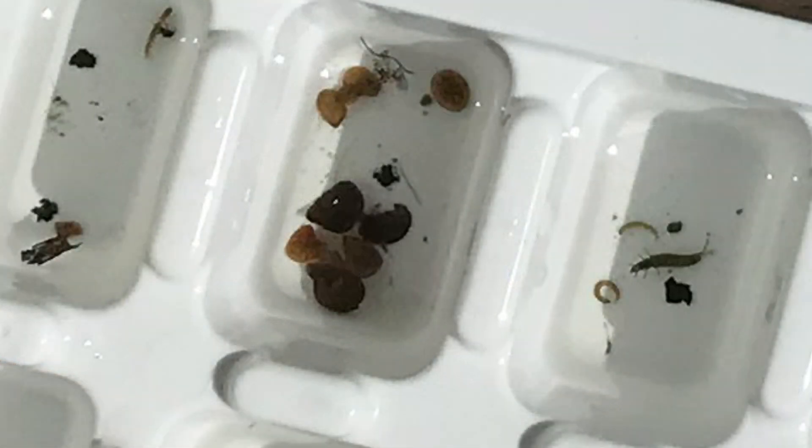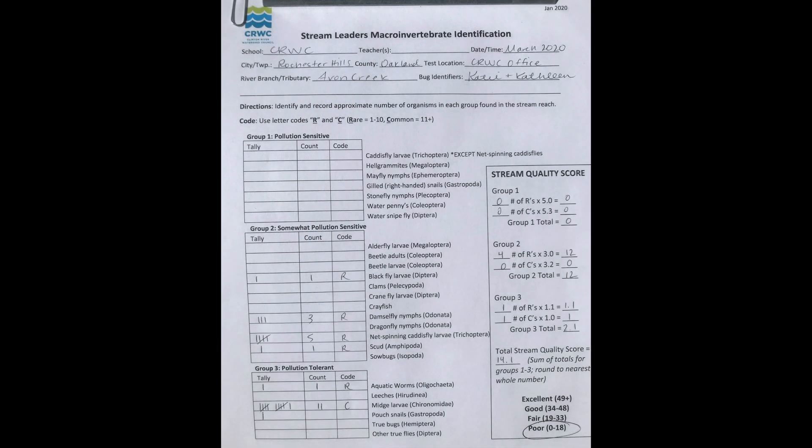Based on the different species and amount of bugs that we found, our stream score ended up as a 14.1. Thank you for watching and learning with us. If you are interested in getting involved or learning more about the Stream Leaders Program, please visit our website at crwc.org.